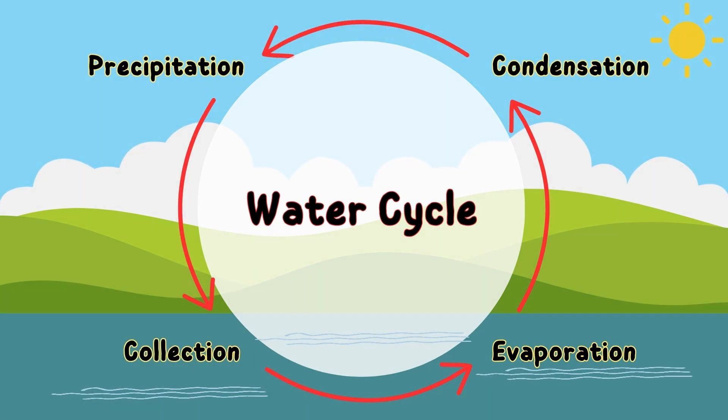There are four steps of the water cycle. First, it's evaporation. Second, it's condensation. Third, it's precipitation. And the last is collection.